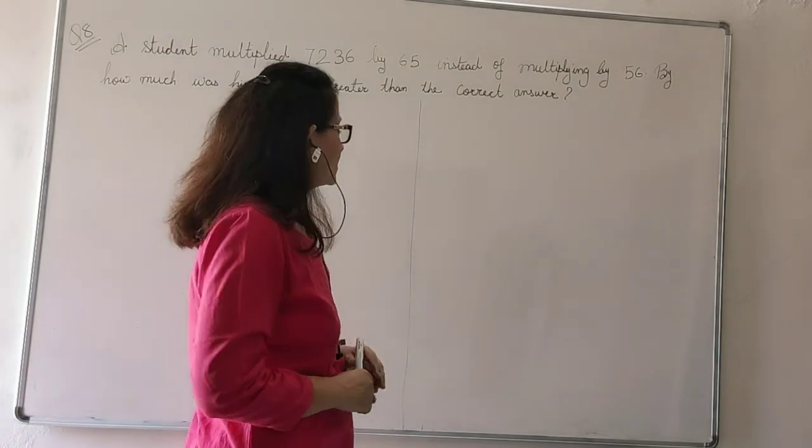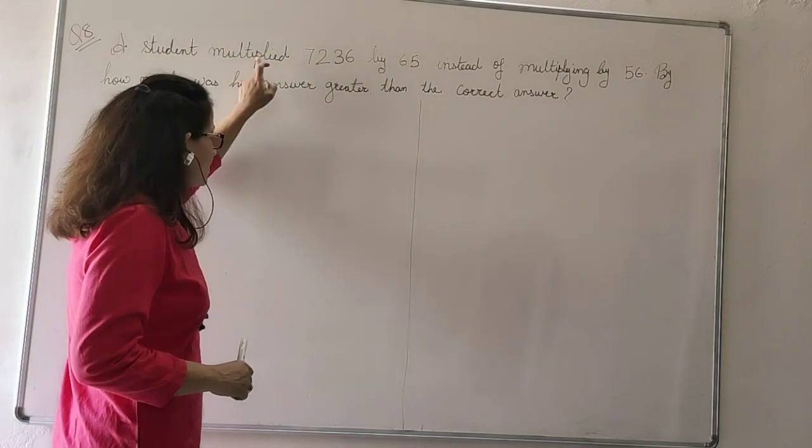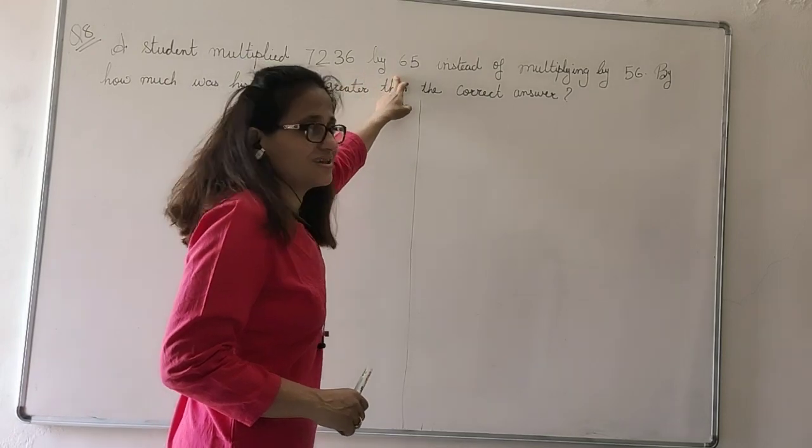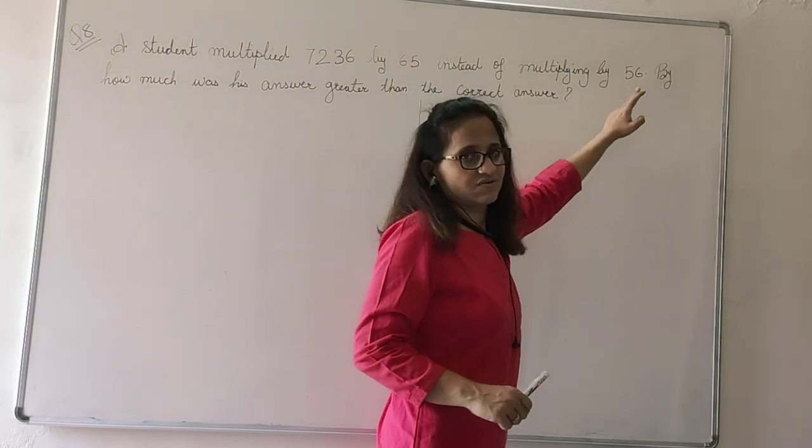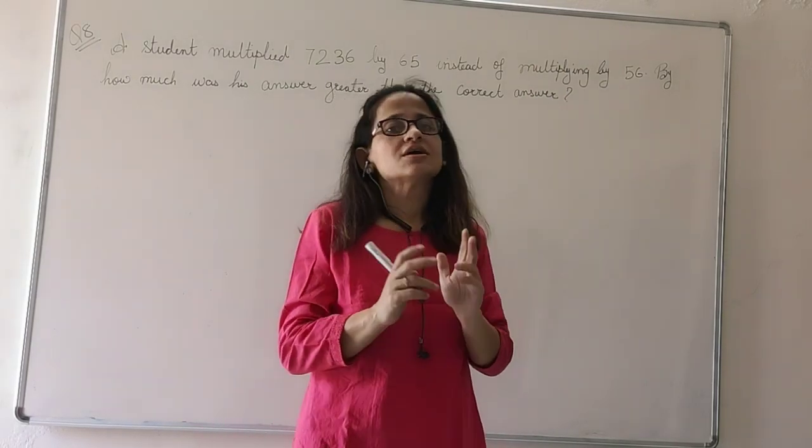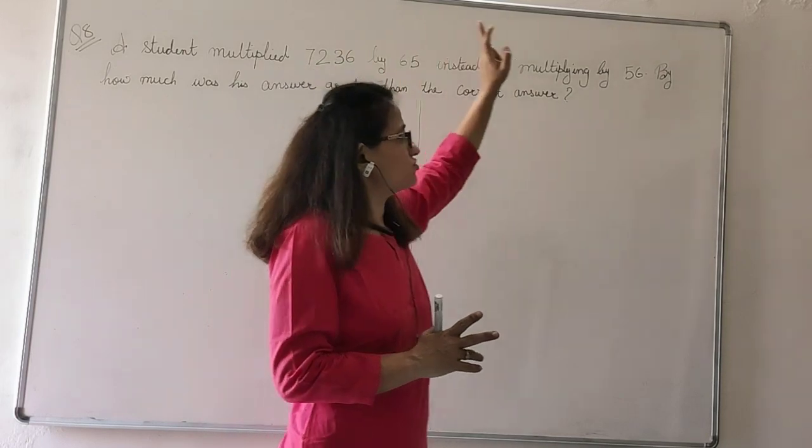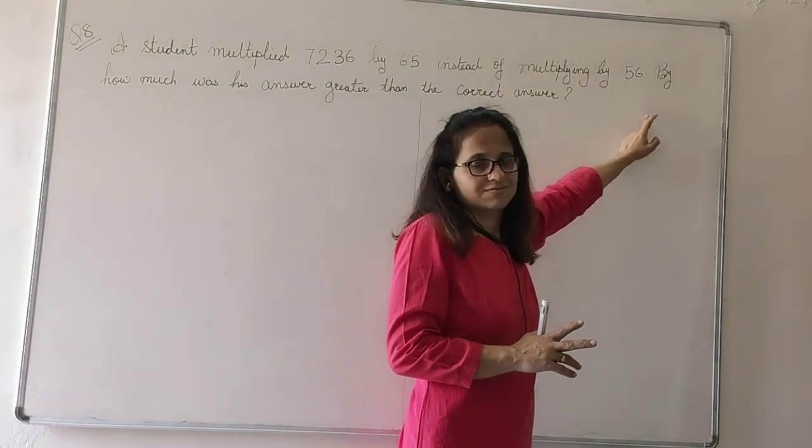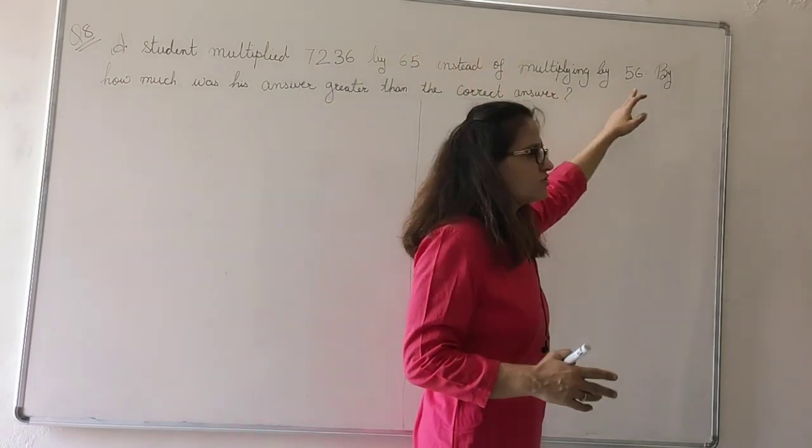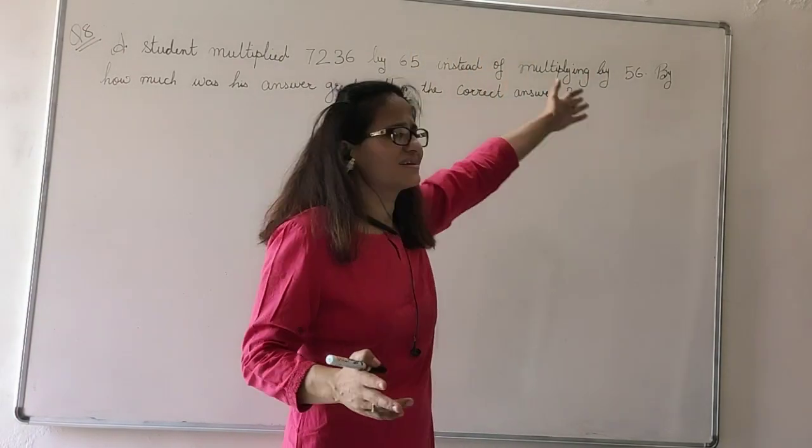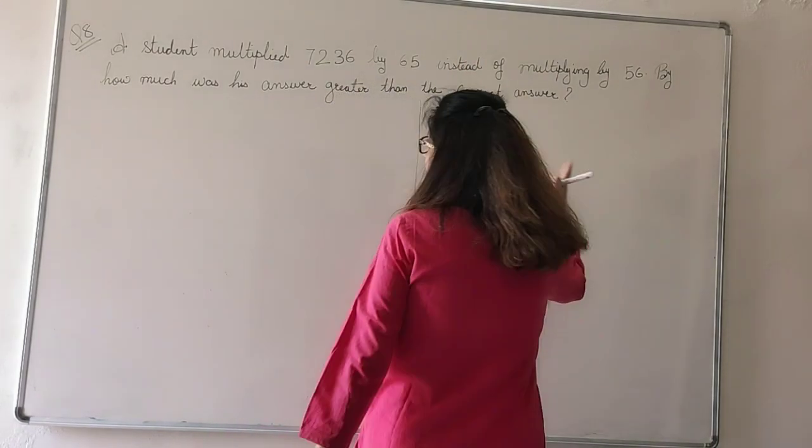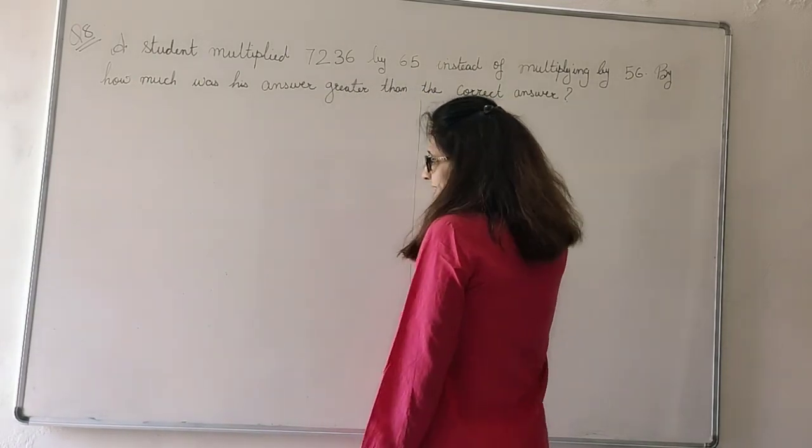A student multiplied 7236 by 65 instead of multiplying by 56. Actually, the question asked was that a student has to multiply 7236 by 56 but he multiplied with 65. So definitely the answer will be more because 65 is greater than 56. So he got a bigger answer. By how much was his answer greater than the correct answer?